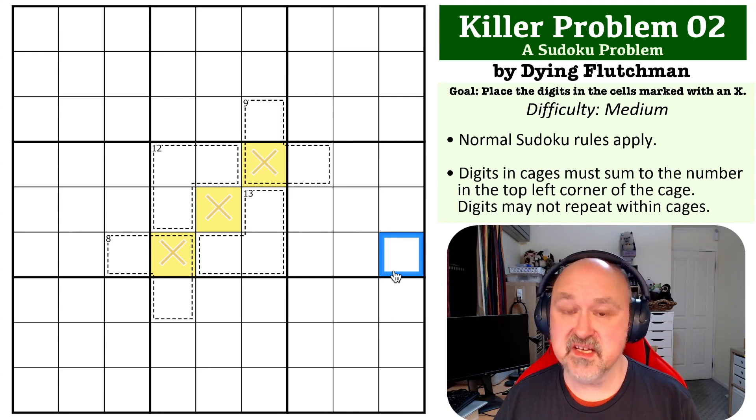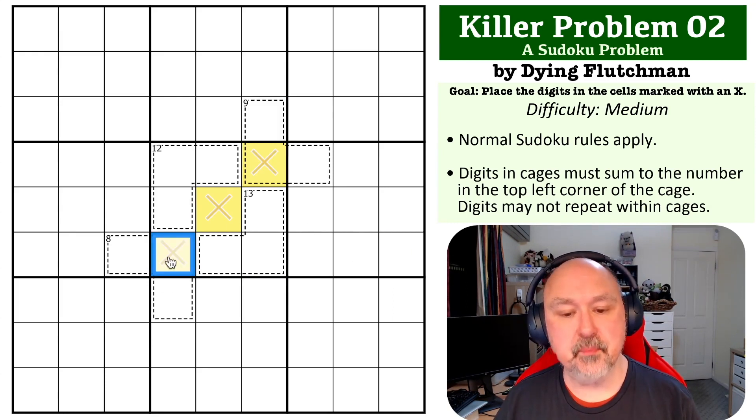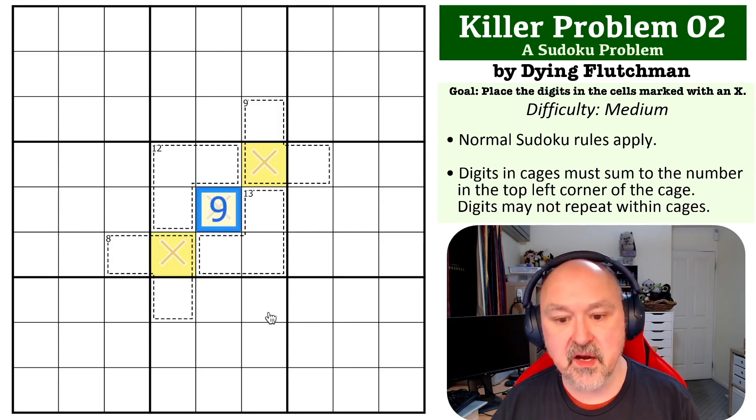So the largest this could possibly be is five, and the largest this could possibly be is six. Those sum to 11, but we know that these have to sum to 20. And if these sum to 11, this has to be a nine, which is the largest it can possibly be.